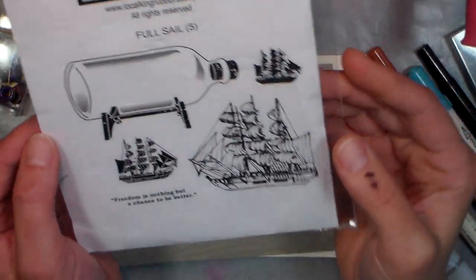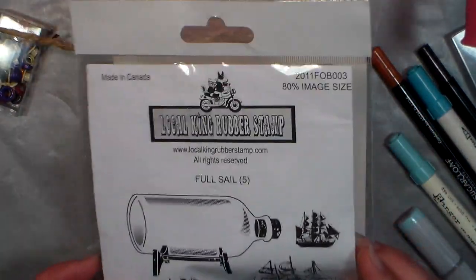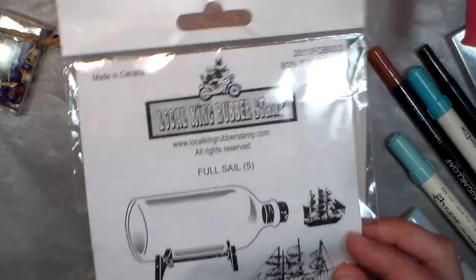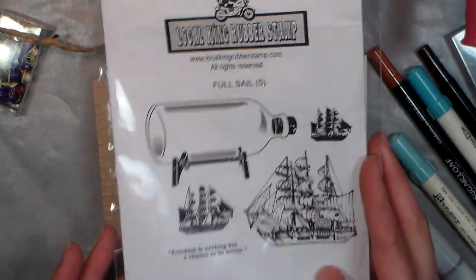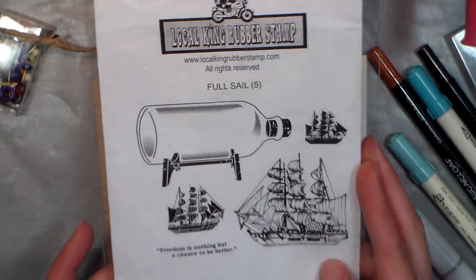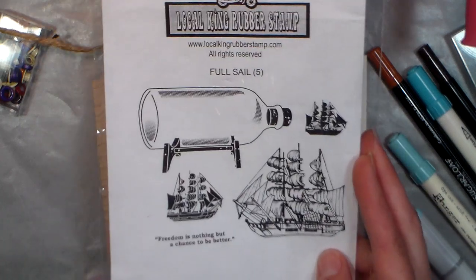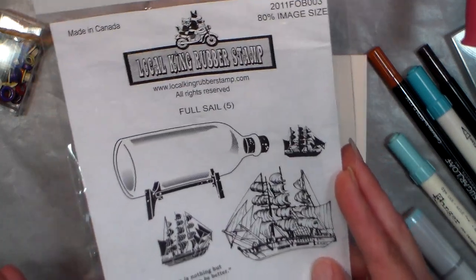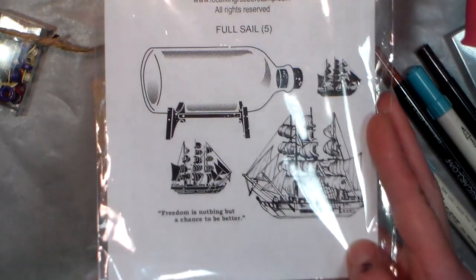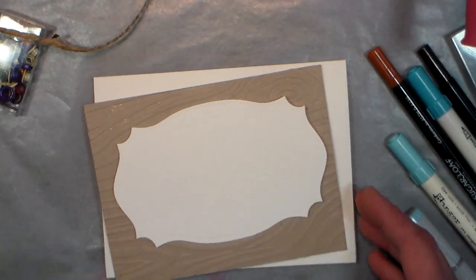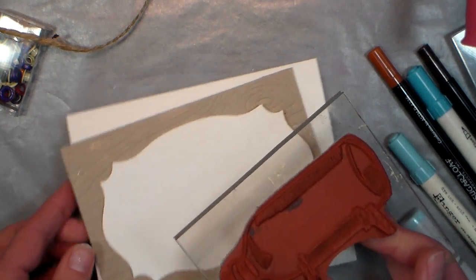Hi there, Lindsay here, the Frugal Crafter. I got this great stamp set, Local King Rubber Stamps, at the stamp show last weekend and I couldn't wait to use it. I thought it would be wonderful for a man's birthday or Father's Day, or any time you need to make a card for a guy or a sea-faring lady in your life. It's a really fun set and it's got a great bottle that could be used for other things as well.